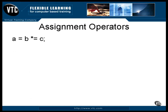Here's one you'll see from time to time. The number 1 is stored in D. Then C gets the result of that assignment, which is also 1. Then B. Then A. Every variable in the list has just been set to 1 with this single statement.